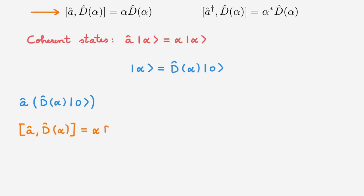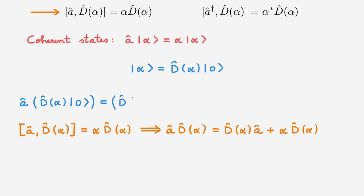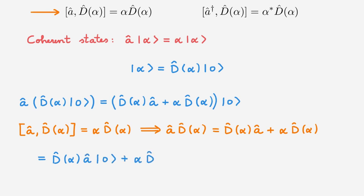We use the commutator of A with D(α), which implies that A D(α) equals D(α) A plus α D(α). Using this, we rewrite the action of A on D(α)|0⟩, expanding it into a term proportional to the lowering operator and a term proportional to α, both acting on the ground state.